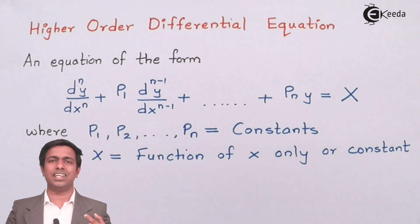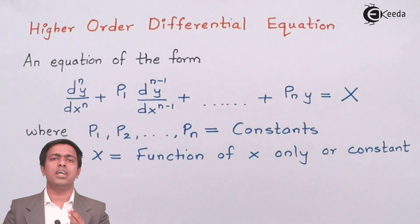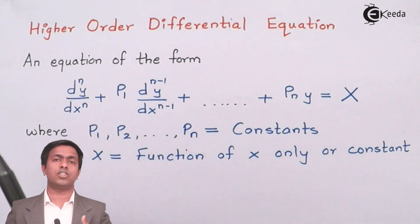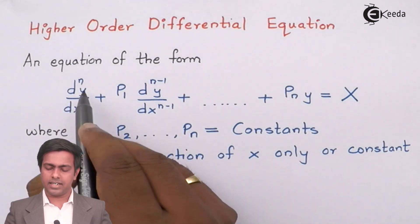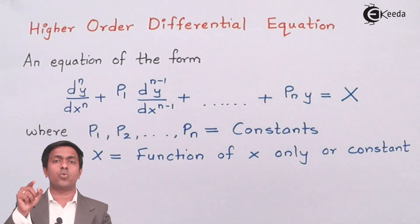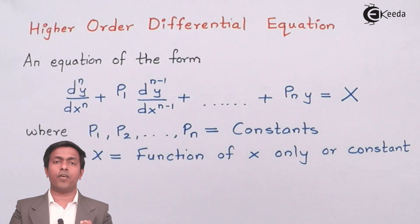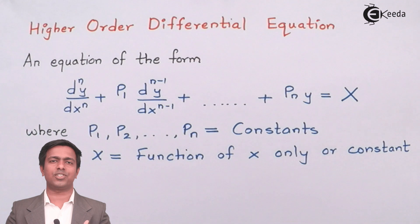Why do we call it a linear differential equation with constant coefficient? Because if you see the degree, for each differential term the order is different — here the order is n, here it is n minus 1, and so on. But if you see the degree, this d^n y / dx^n has a power of 1. Whenever the power of the differential term is equal to 1, we call such an equation a linear differential equation.